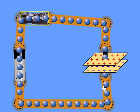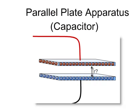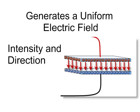What happened here was electrons built up on the bottom plate and created a net negative charge. That negative charge drove the free electrons out of the top plate and left a positive charge. And what we really have here is a potential difference between those two plates. This is a sort of capacitor — this parallel plate apparatus. What's interesting about this apparatus is that it generates a uniform electric field between the two plates.